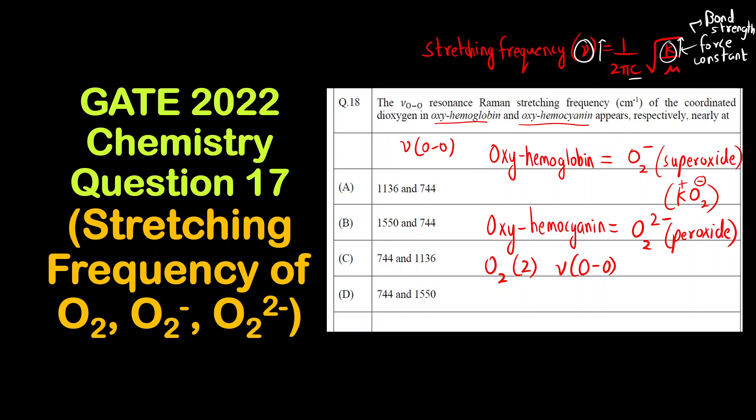Let us come back to O2. Stretching frequency of neutral oxygen is around 1580 cm⁻¹, around 1500 cm⁻¹.